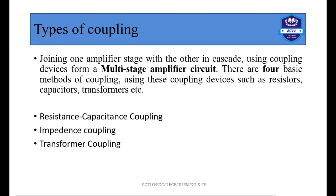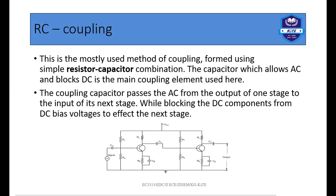RC coupling — resistance-capacitance coupling — is the most commonly used type of coupling method. A resistor and capacitor combination is used for coupling. A capacitor allows AC and blocks DC, and it is the main coupling element used here. The coupling capacitor passes the AC signal from the output of one stage to the input of the next stage, while blocking the DC component from the bias network from affecting the next stage.